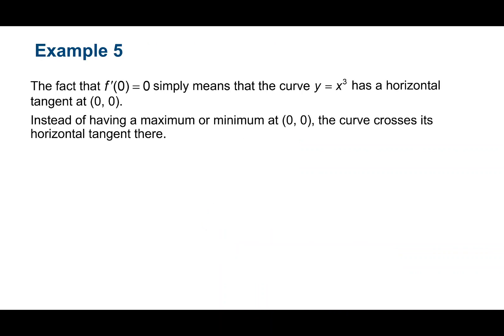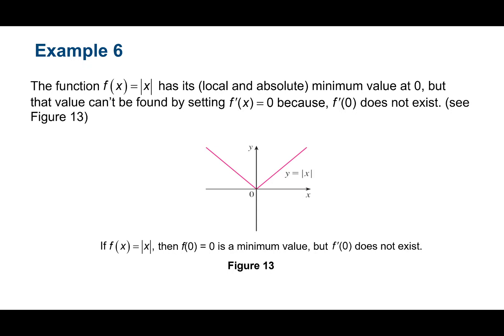Looking at f(x) = |x|, we have a local — in fact absolute — minimum at x = 0. But we do not have a horizontal tangent line there, because at a sharp corner the function is not differentiable. At x = 0, our derivative does not exist. But we still have a local minimum. That's an example of why we need the condition 'if the derivative exists': there can be a local min or max where the derivative doesn't exist.